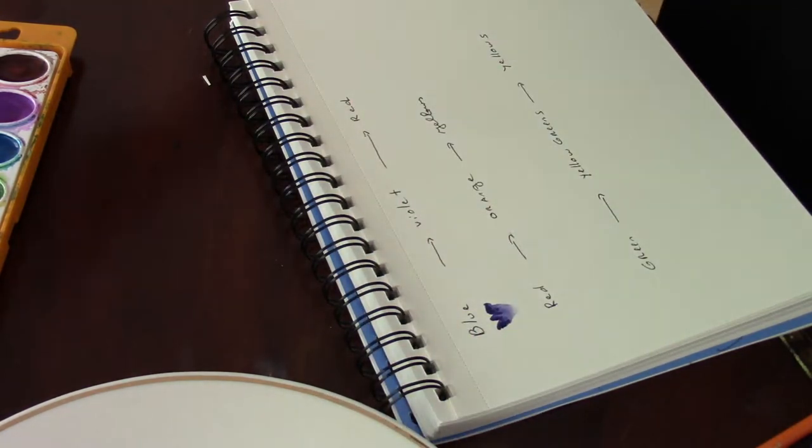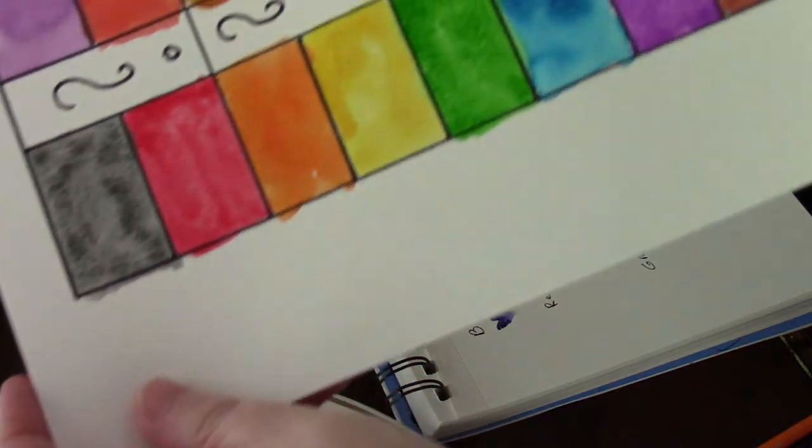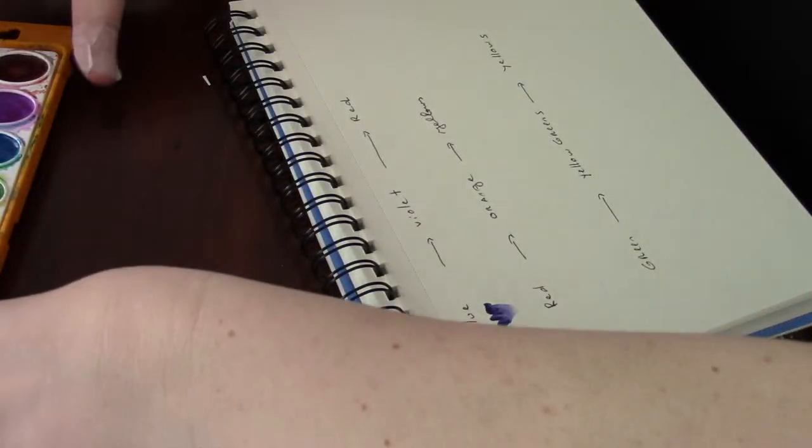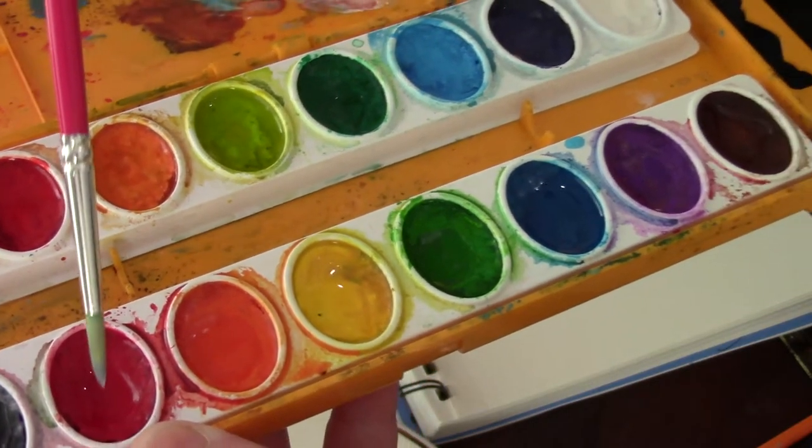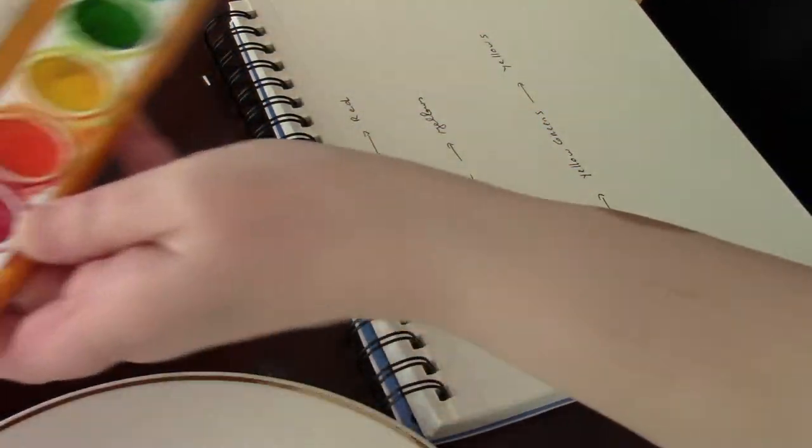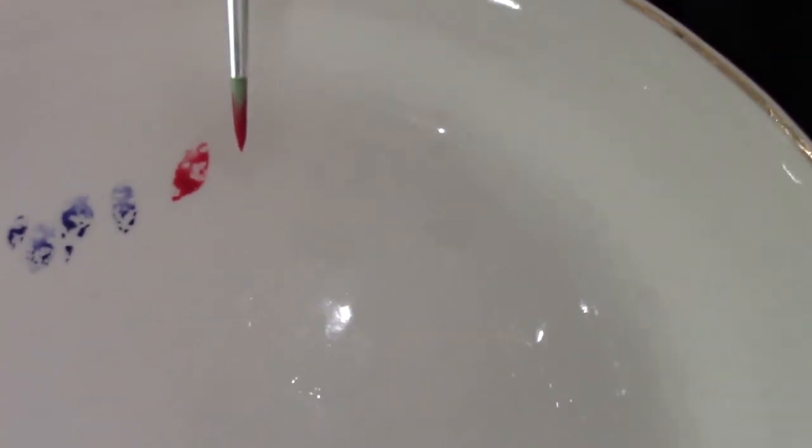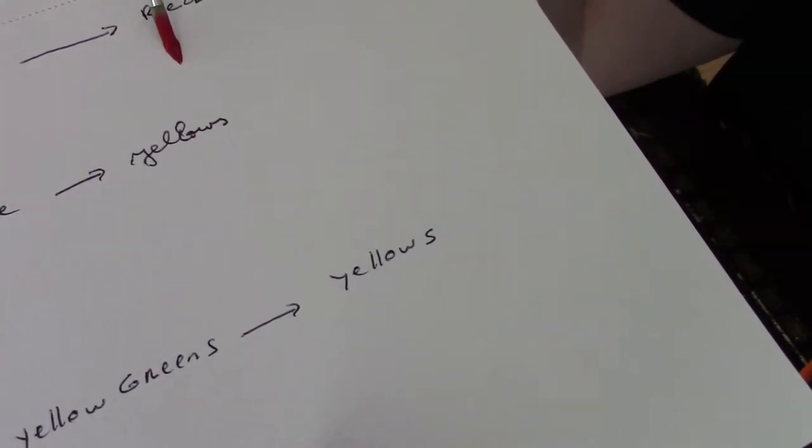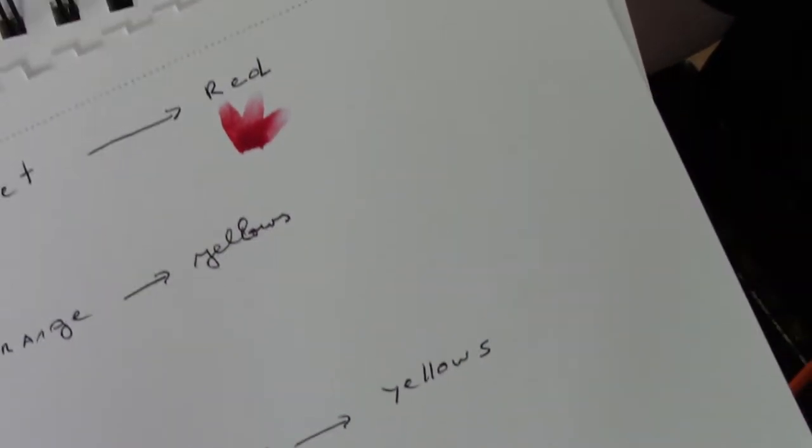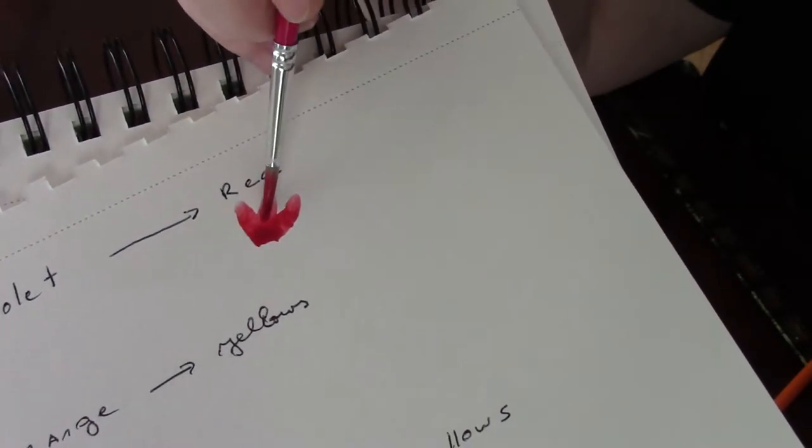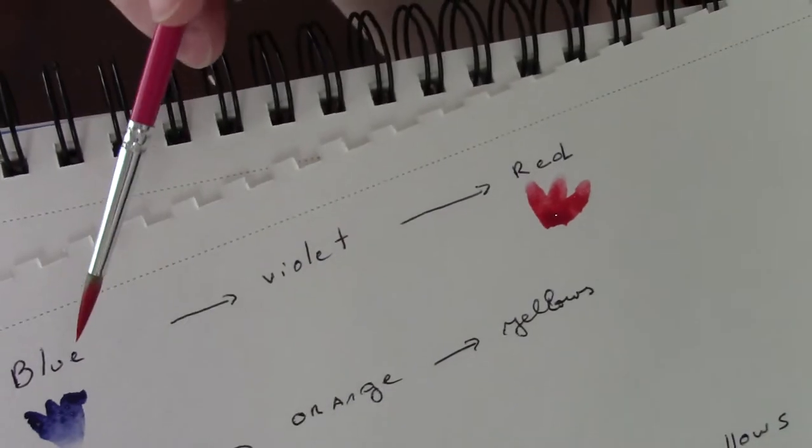On the other side of the spectrum we have red. Let's find out where we find the red. Our red is right here, which is right next to the black paint. I'm just going to take a little bit of that and again we're going to create the little red petals. I'm just going to create a tiny little flower, making the little red petals. So here we have our blue and here we have our red.